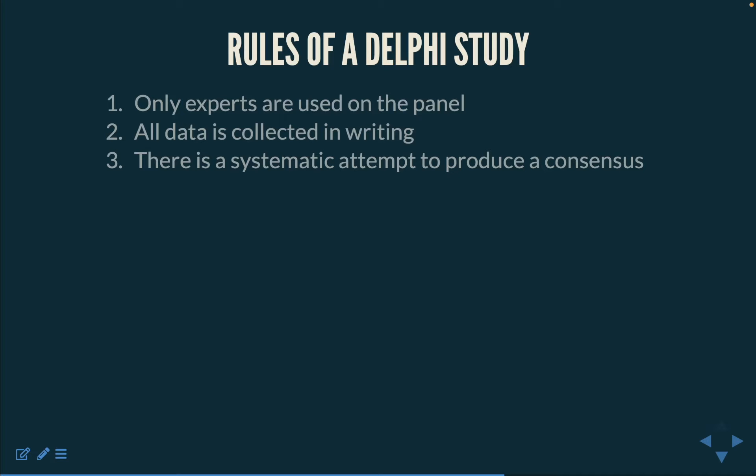There is a systematic attempt to produce a consensus. There is a deliberate attempt to achieve some form of consensus from the panel, although it is not always achievable — it is the goal of this method. This is not concerned with manipulation or coercion; it is concerned with sharing of views and being given the opportunity to consider views based on opposing arguments.